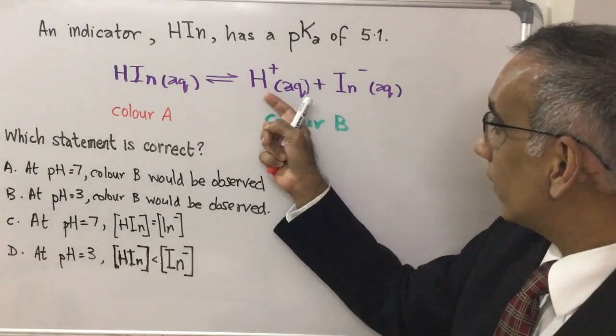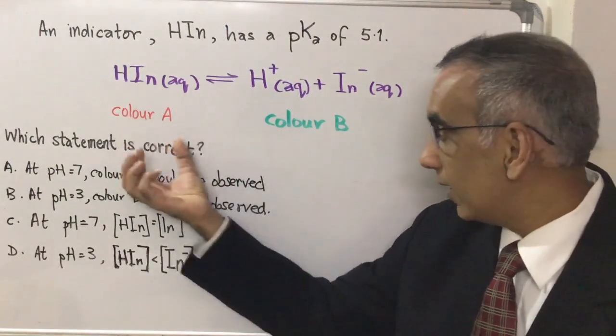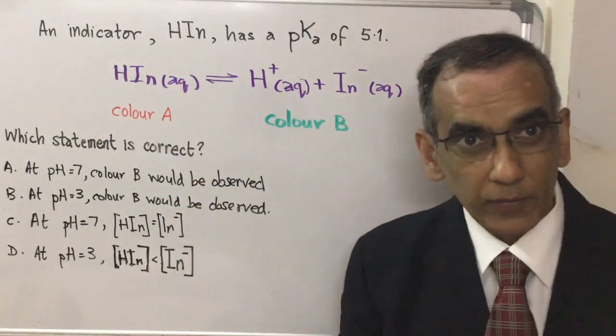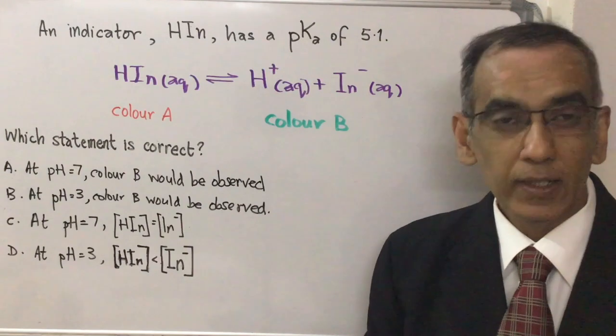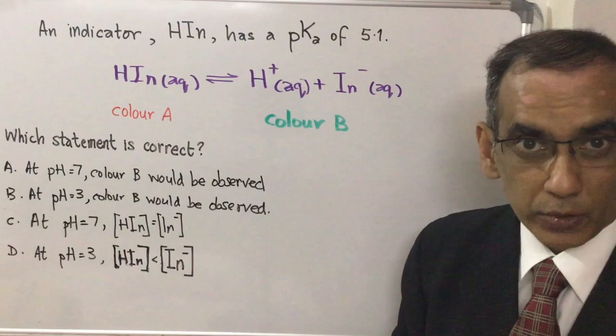Here you have color A and here you have color B. This of course is typical of an indicator. It needs to change color depending upon the pH of the surrounding solution.